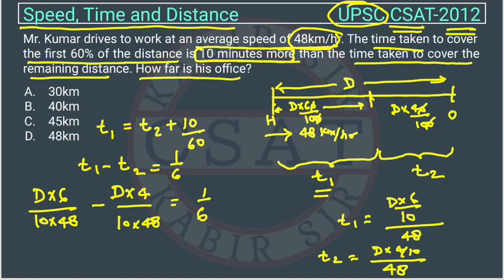We will take the LCM. We can directly take it here. This will be 10 into 48. From 6 this will go 8 times. So 6D minus 4D will be 2D. 2D will be equal to 10 into 8. This 2 will cancel with 8, giving 4 times. So D will be 40.